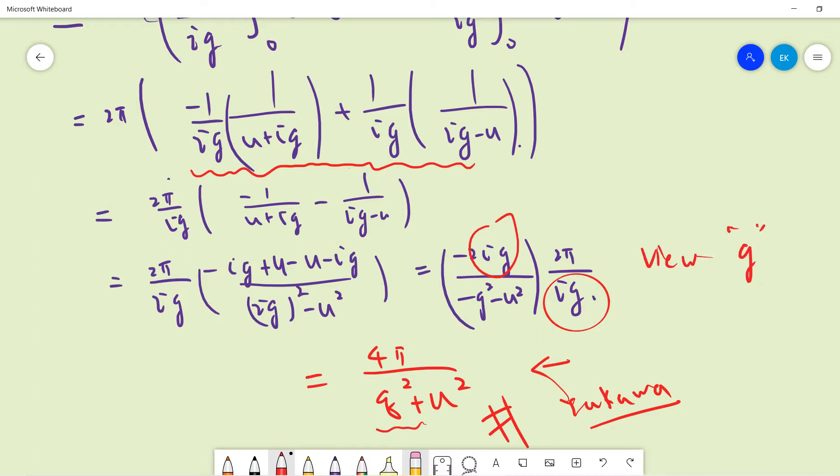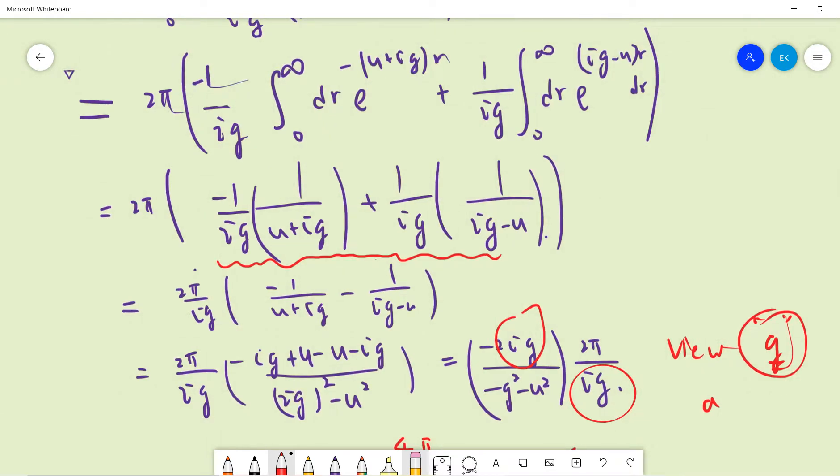in high energy theory people call it the Yukawa potential. If you're a physics person, you can view μ as the mass, so basically you can view this as the screened Coulomb potential.